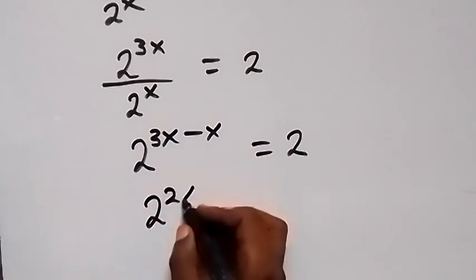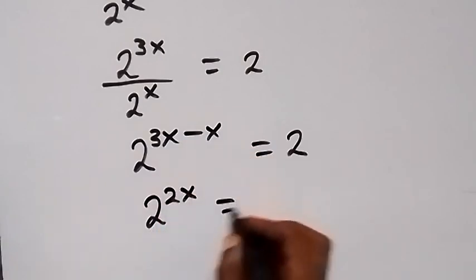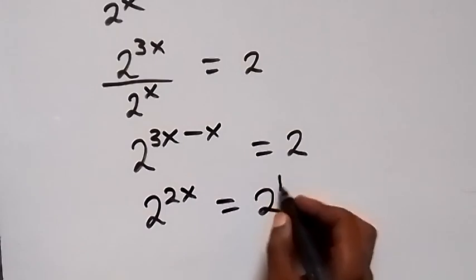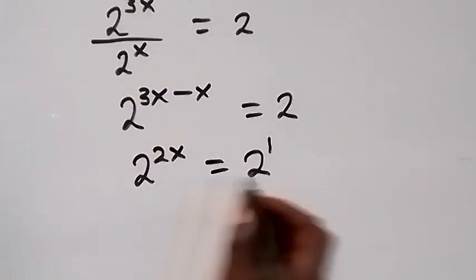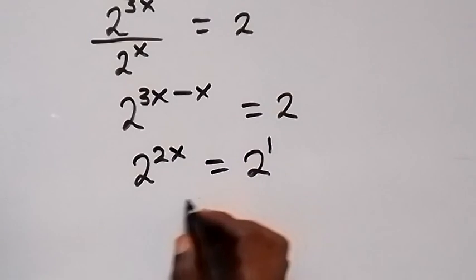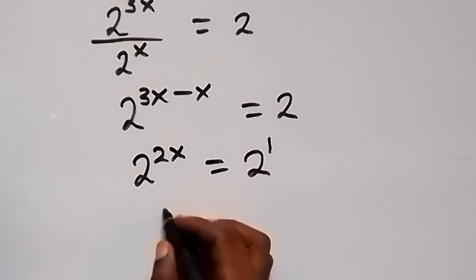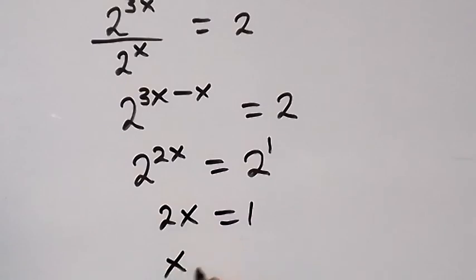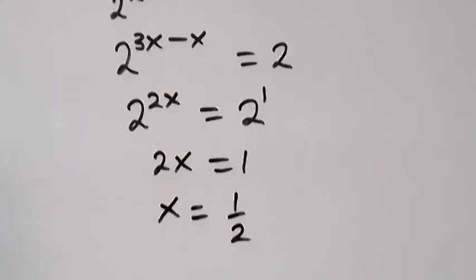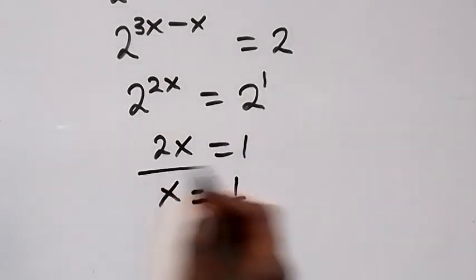So we have 2 raised to power 2x equals 2, which is also 2 raised to power 1. Since the bases are the same, we equate the powers: 2x equals 1, therefore x equals 1 over 2. So the value of x is one half.